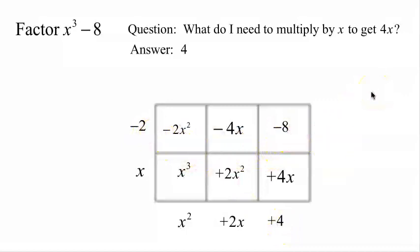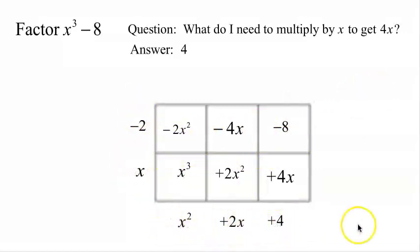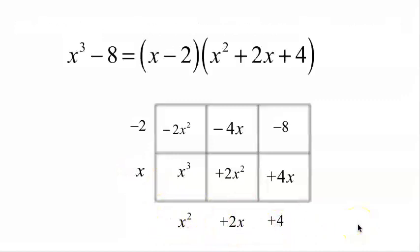Reading off our factors: x minus 2 is one, and x squared plus 2x plus 4 is the other. So x cubed minus 8 equals x minus 2 times x squared plus 2x plus 4.